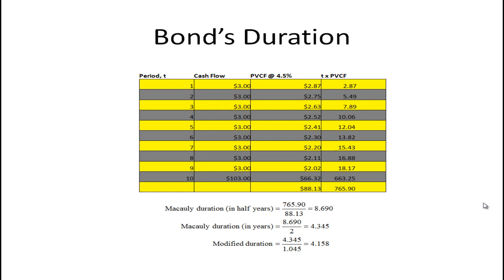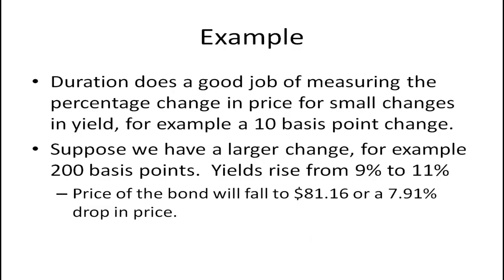Modified duration is Macaulay duration divided by one plus the yield, giving us 4.158. For a small change in interest rates — for example a 10 basis point change — duration does a pretty good job. But what if we have a larger change, for example 200 basis points? If yields rise from nine percent to eleven percent, the price of the bond is going to fall to 81.16.